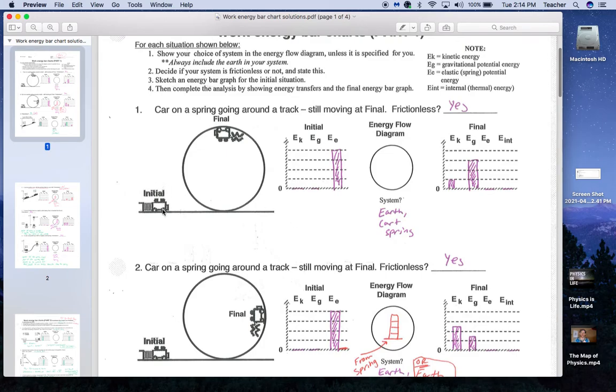Initially, when the cart is up here, it's got all elastic potential energy. At the tippy-top of its path, it's still moving. So at this final condition, it still has some kinetic energy, but it also has gravitational potential energy. The spring energy is gone. No internal energy because I said that it was frictionless.